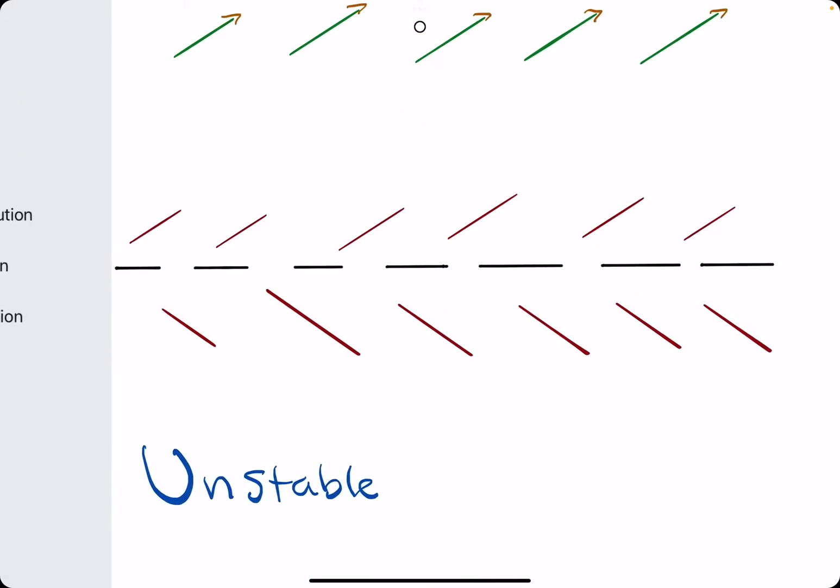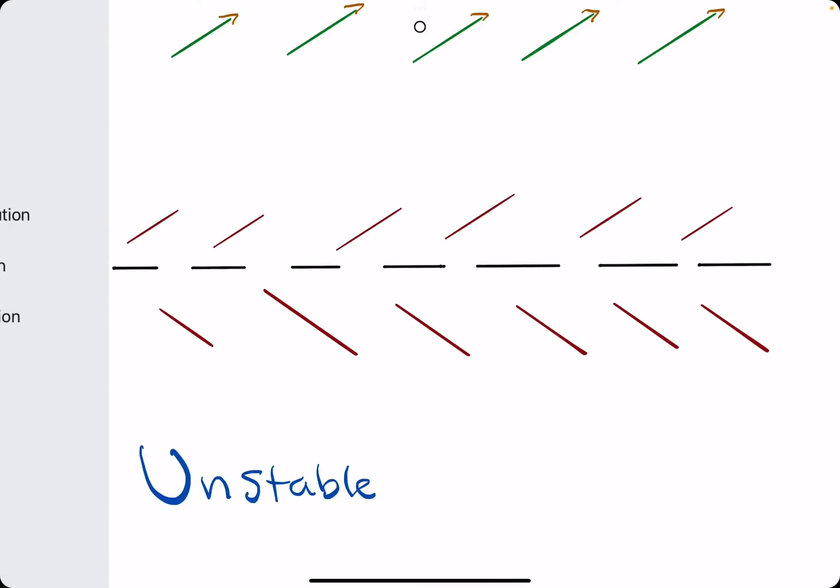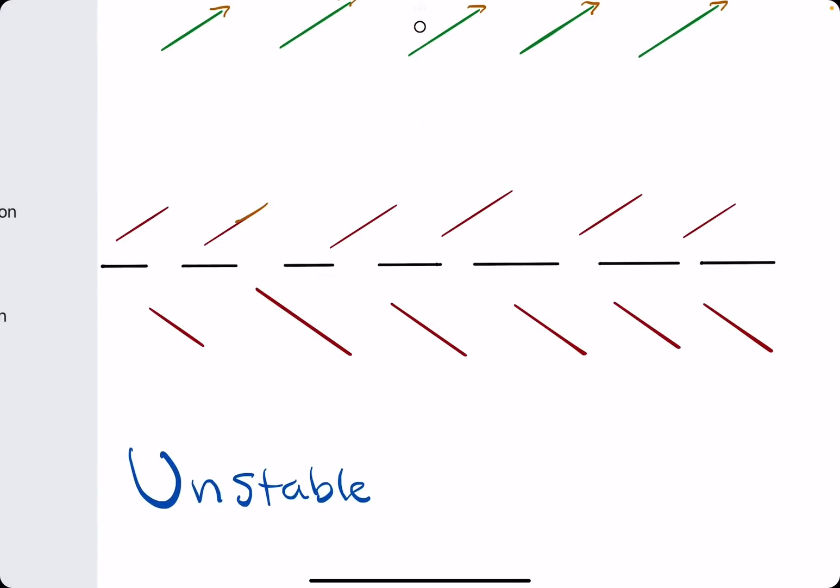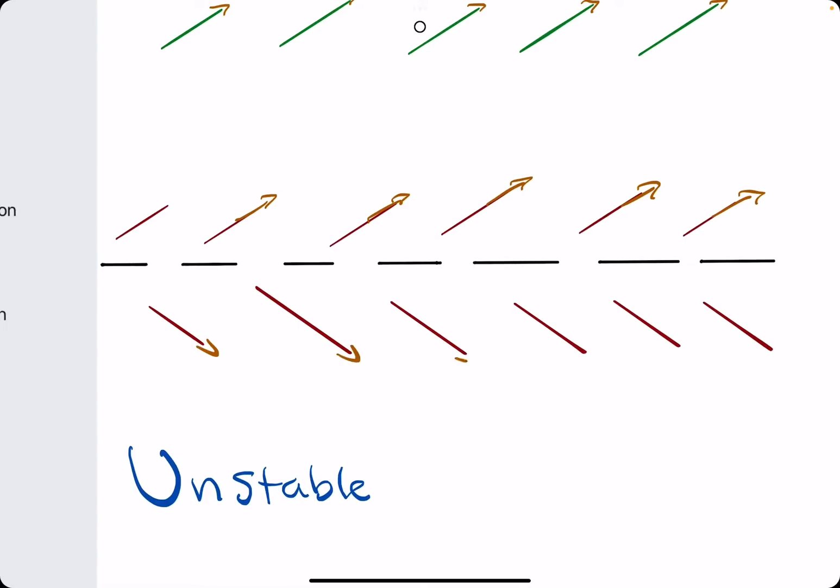If, on the other hand, as you scan from left to right, if they are going away from the line, from the equilibrium solution, then this is unstable.